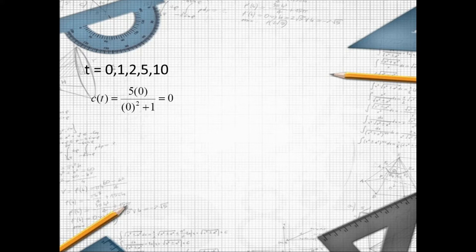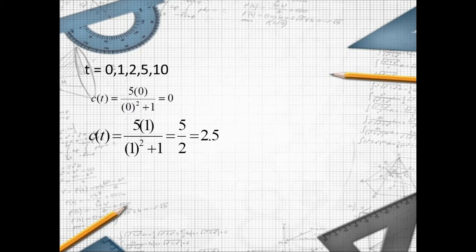Our t values are 0, 1, 2, 5, and 10. At t equals 0, c of t equals 5 times 0 over 0 squared plus 1, which equals 0. At t equals 1, c of t equals 5 times 1 over 1 squared plus 1.